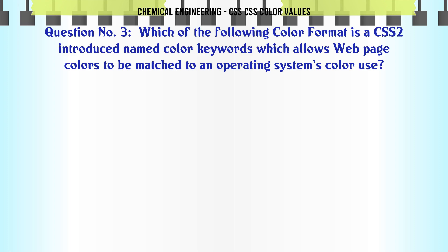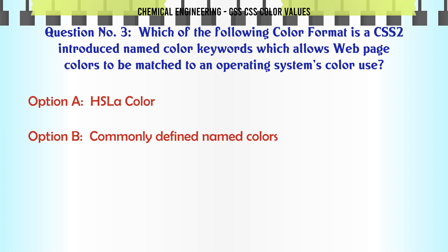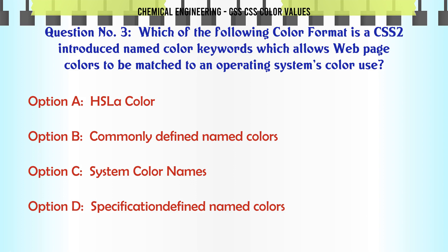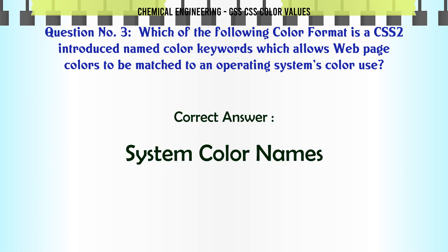Which of the following color formats is a CSS2 introduced named color keyword which allows web page colors to be matched to an operating system's color use? A: HSLA color. B: commonly defined named colors. C: system color names. D: specification defined named colors. The correct answer is: system color names.